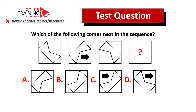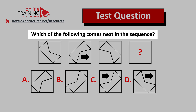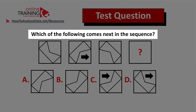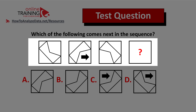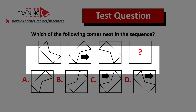Let me share with you a tricky question from the test which validates your knowledge of pattern recognition and logical reasoning. Which of the following comes next in the sequence? You're presented with four squares. The fourth square has a question mark, which means that you need to figure it out. And you have four different choices.